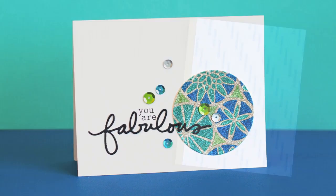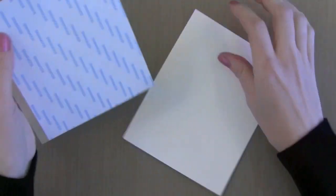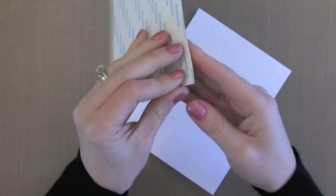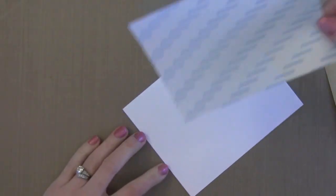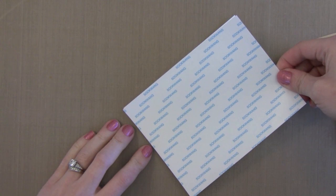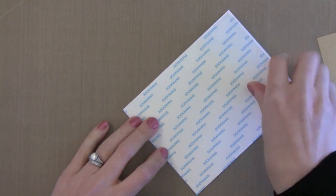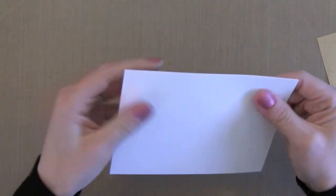I'm starting out with a piece of Be Creative double sided tape. Any double sided tape would work here. I've cut it to 4.25 by 5.5 inches. I'll take off this brown release paper but save that because we're going to need it in a moment. I'm sticking this onto a piece of white card stock.